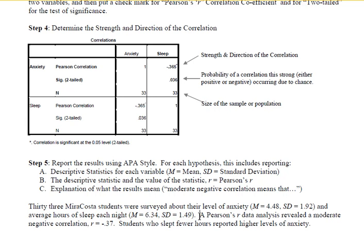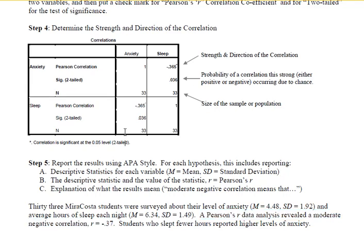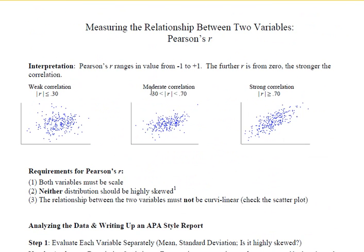A Pearson's R data analysis revealed a moderate negative correlation of negative 0.37. I'm telling my reader how I got this R — I used Pearson's R — and that it's a negative correlation. Since it's negative 0.37, that is a negative moderate correlation. We said that if R is between 0.3 and 0.7 it's moderate. This is on the low end of moderate, but it's still moderate.